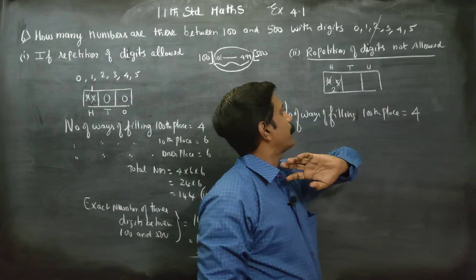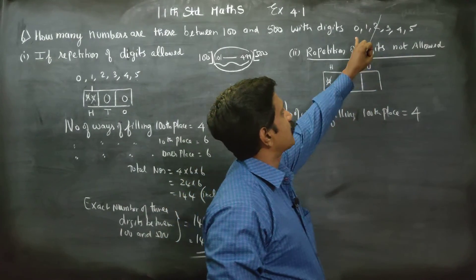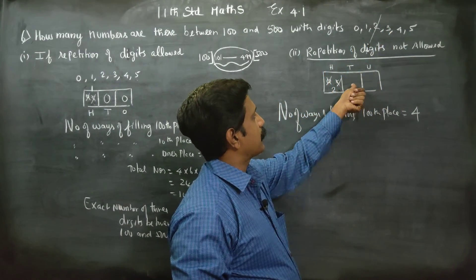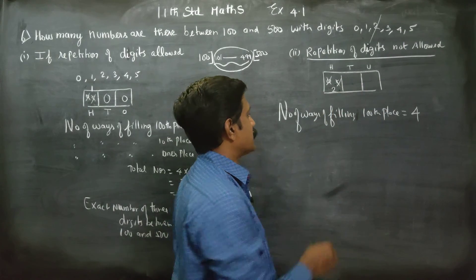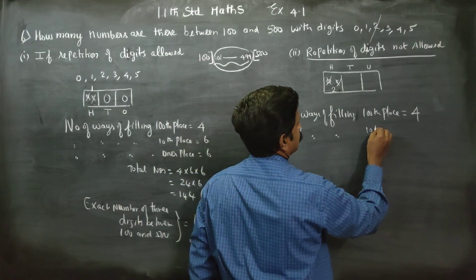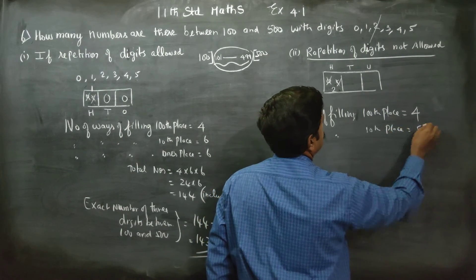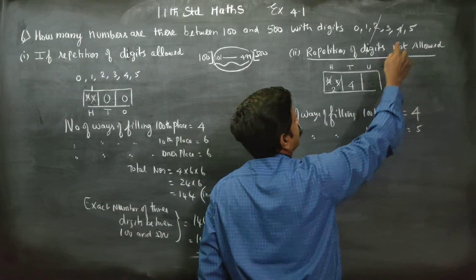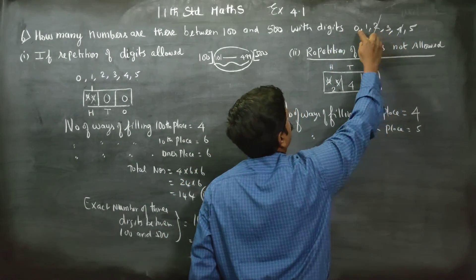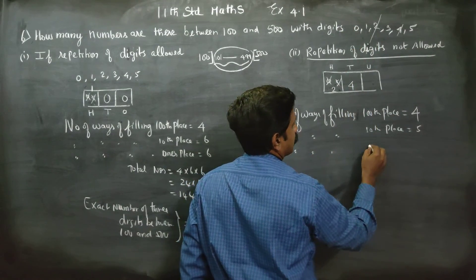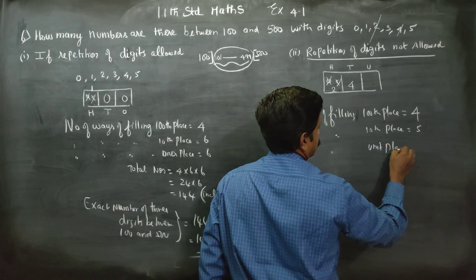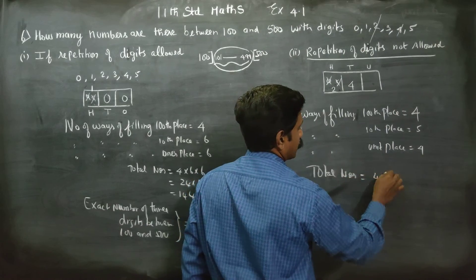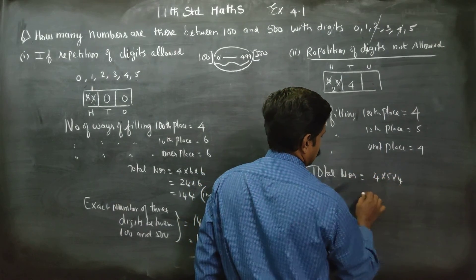Repetition is not allowed. From the remaining digits, the 10th place can be filled in 5 ways. For the unit place, one number is already used for the 100th place, so the number of ways of filling the unit place is 4 ways. Therefore, total numbers is equal to 4 into 5 into 4. Your answer is 80.